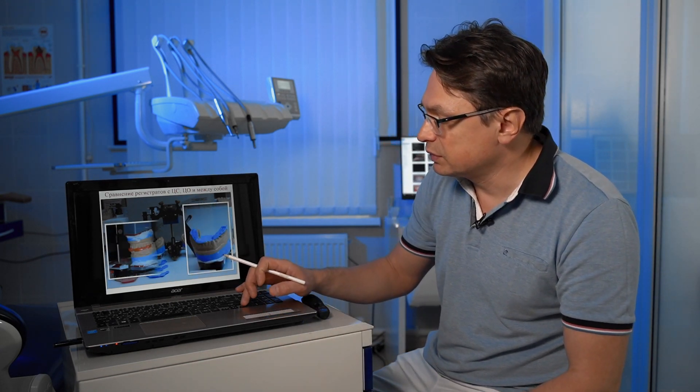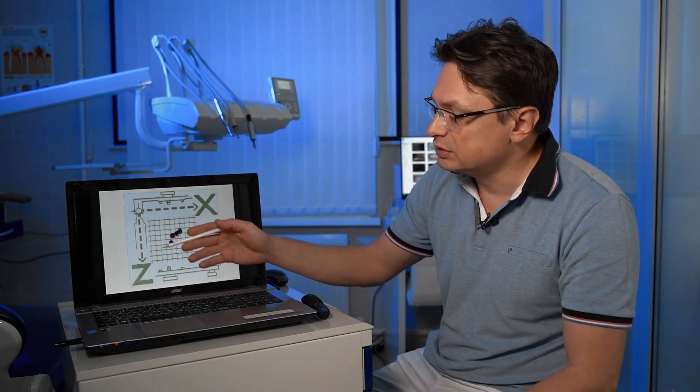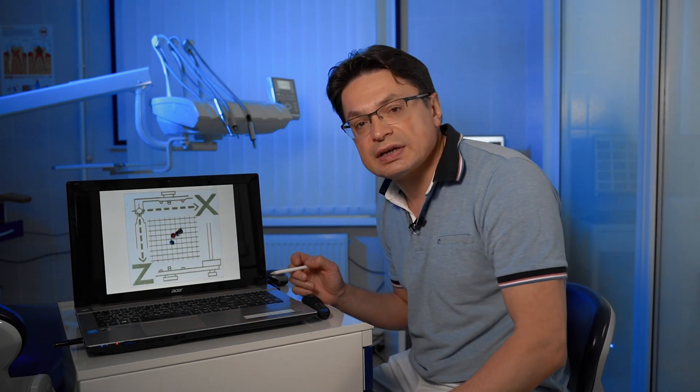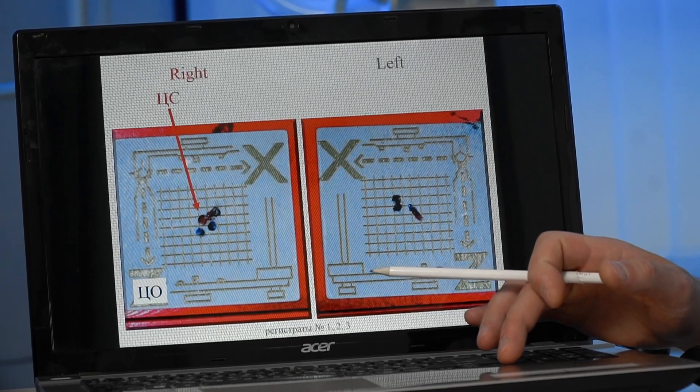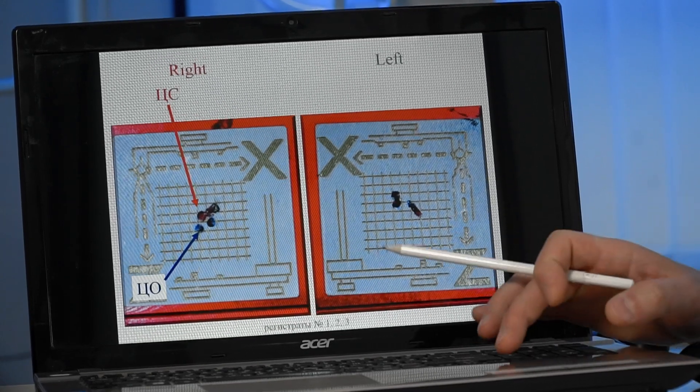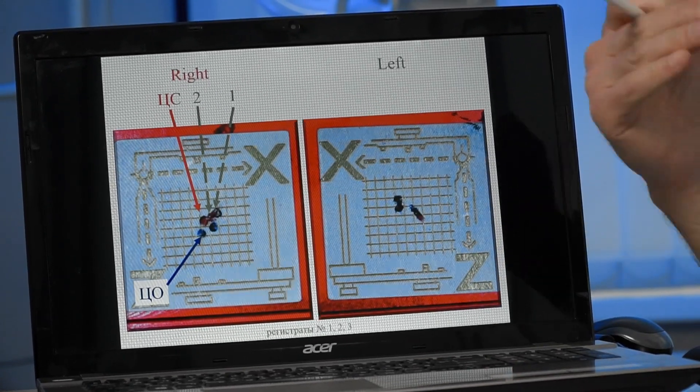It shouldn't be like that, otherwise every time you will receive different types of your relationship. And we provide an investigation in which we registered with the device MPI what joint relationship has every type of register. This device helps us to assess the relation of the condyle to the fossa.